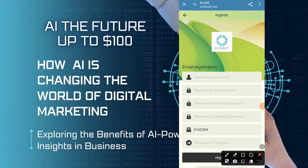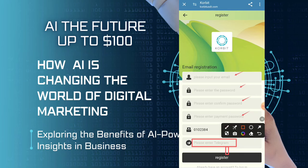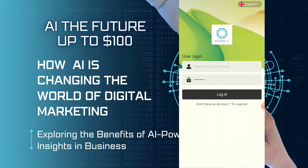When you click on the link given in the description, you will see the interface. You just have to enter your email, enter your password, add the password again for confirmation, add the payment password and invitation code, enter your Telegram account, and click on Register. Your account will be created. I have already made my account and I'm going to enter my login information here.